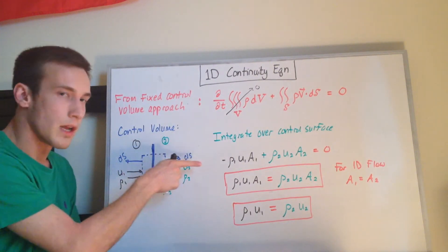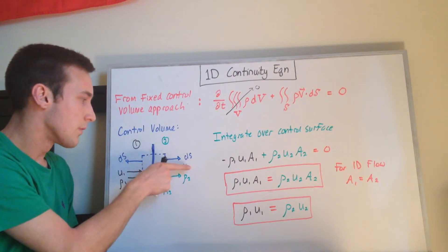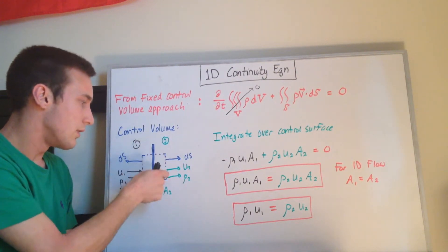And then on the other side, we have flow going out, so we have u2 velocity going out, and then we have rho2, which is density going out, and the area of this is a2.